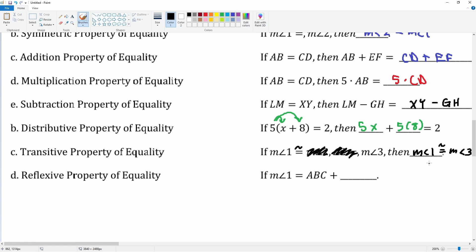The reflexive property is identical. A measurement of angle 1 is equal to ABC, therefore the measurement of angle 1 is also equal to ABC. They're identical.